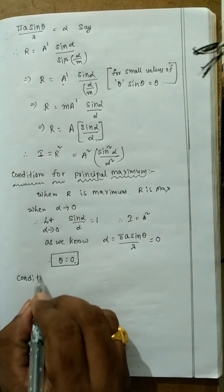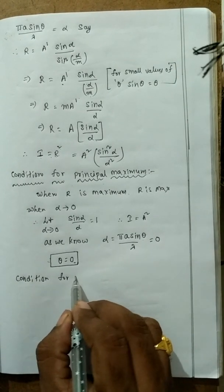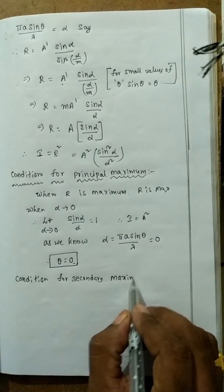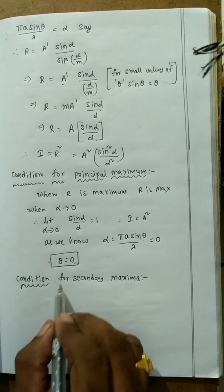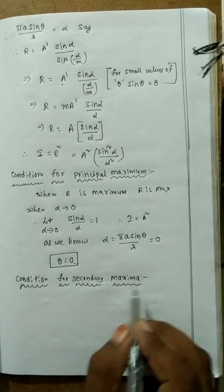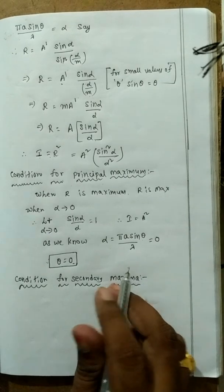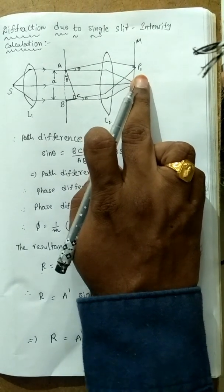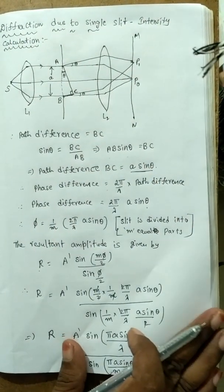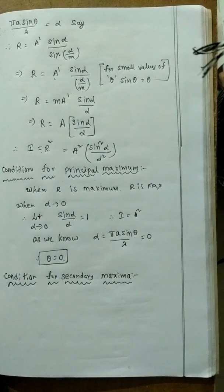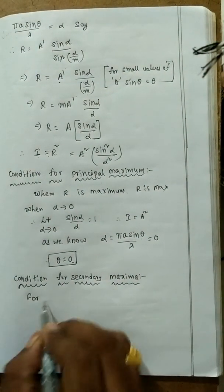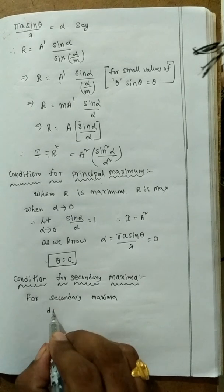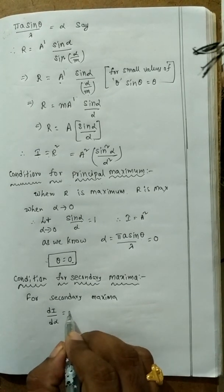Condition for minima and secondary maxima: for secondary maxima, we differentiate the intensity with respect to α and set it to zero: dI/dα = 0.